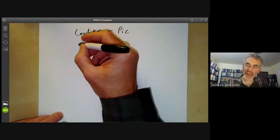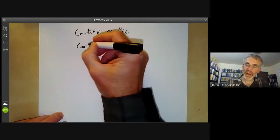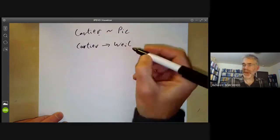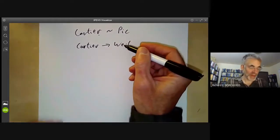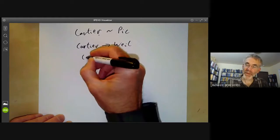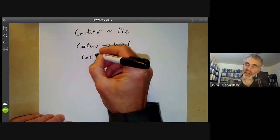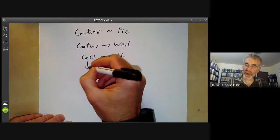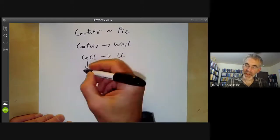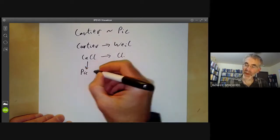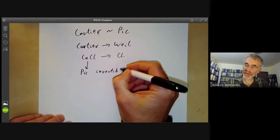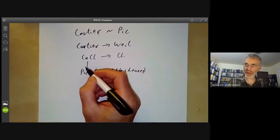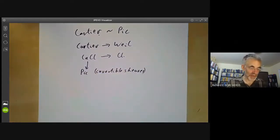Recall that last lecture we defined a map from Cartier divisors to Weil divisors, which was an isomorphism for reasonably well-behaved schemes. Similarly, we have a map between Cartier divisor classes and Weil divisor classes. In this lecture we'll construct a homomorphism from Cartier divisor classes to the Picard group of invertible sheaves or line bundles. This map will in practice usually be an isomorphism.